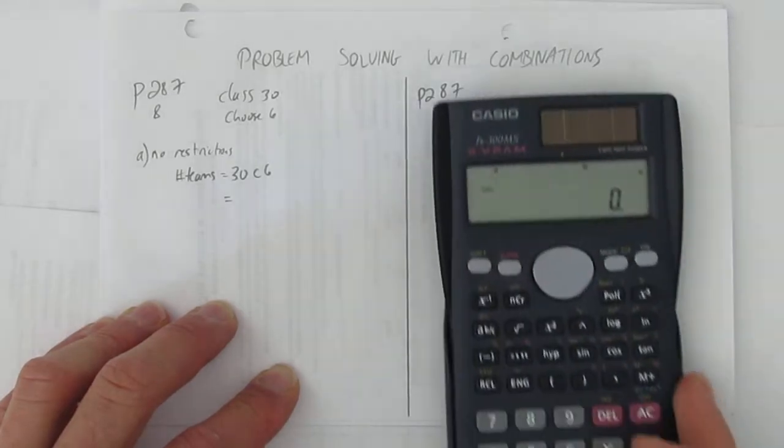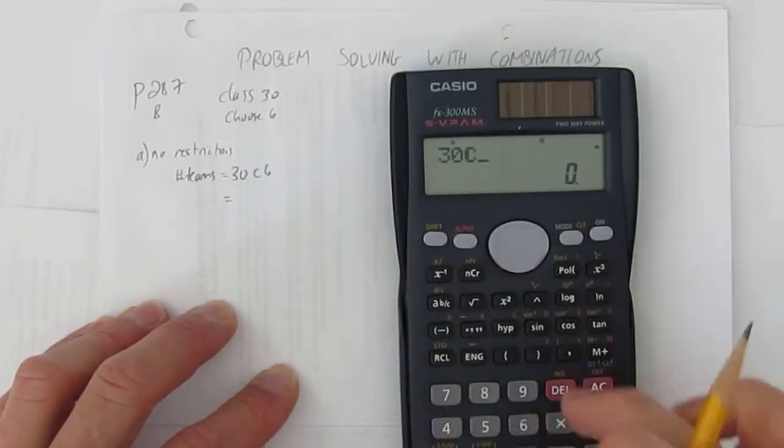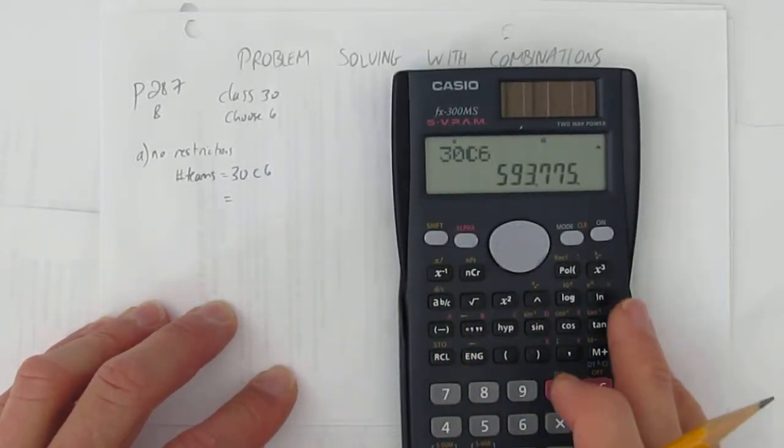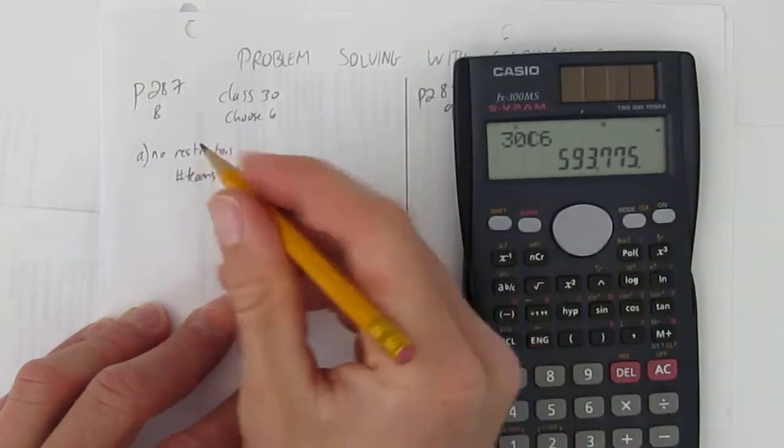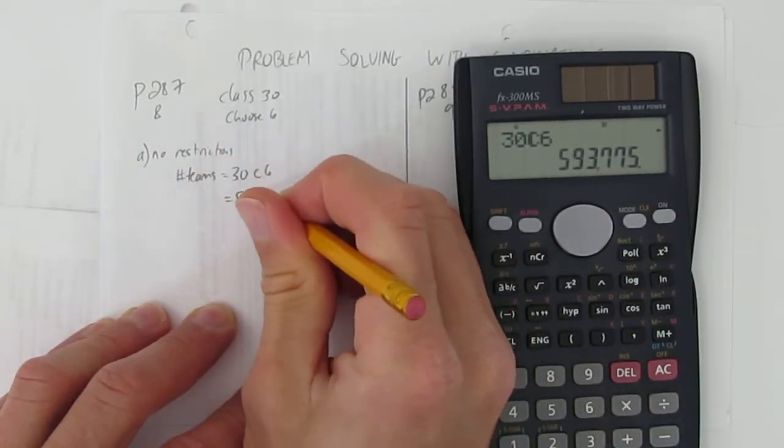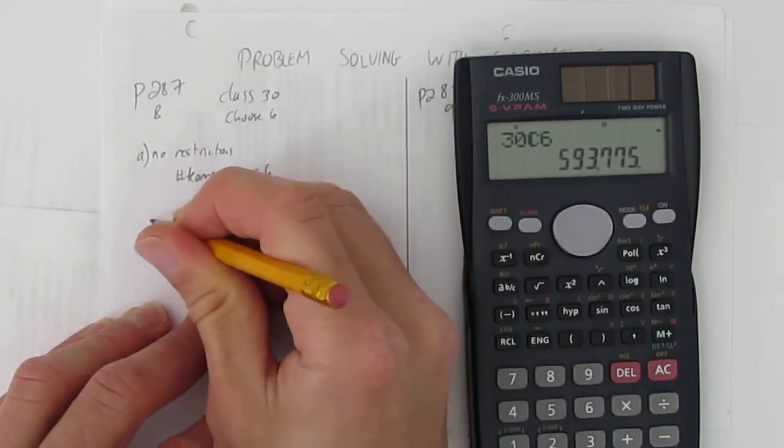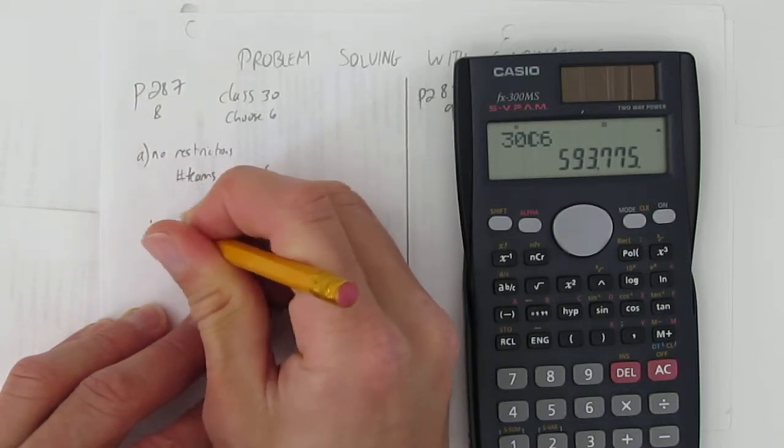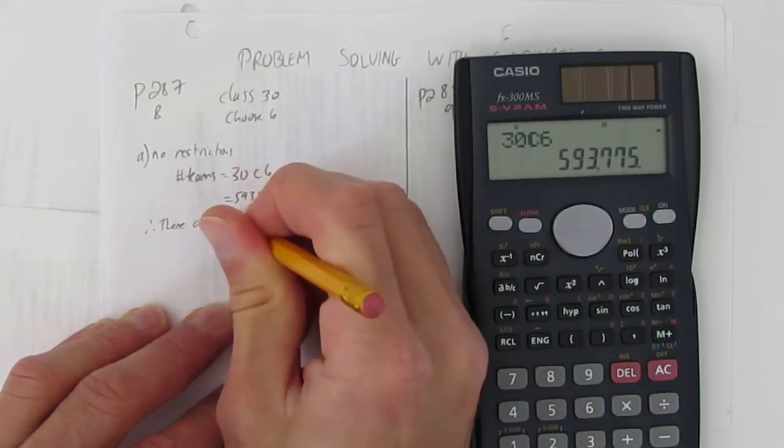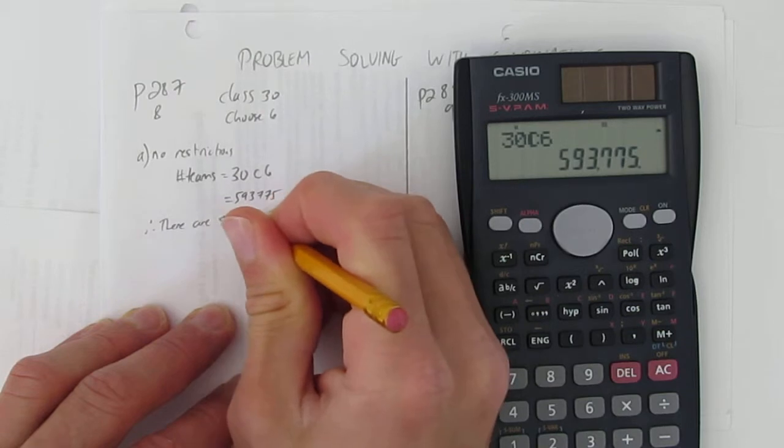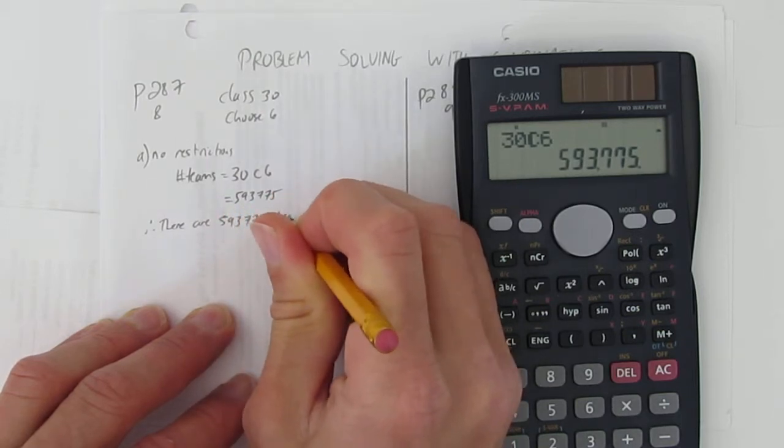Which is going to be, what's 30 choose 6, and you get 593,775. Quick word answer, there are 593,775 teams.